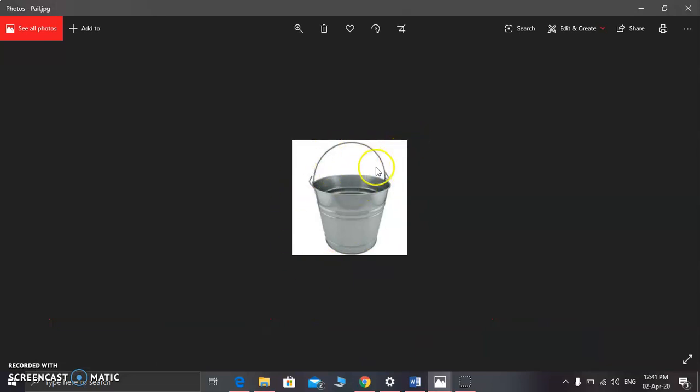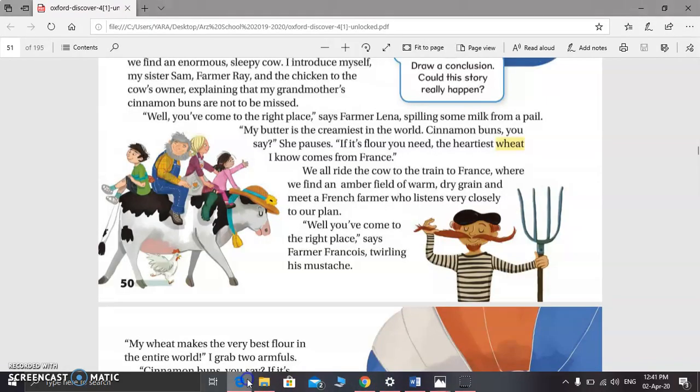It could be filled with liquid, of course. So they met Farmer Lena and she was spilling some milk from a pail, as I showed you. She said, my butter is the creamiest in the world, so it's full of cream. Cinnamon buns, you say? She pauses. She was wondering and then she gave a pause—she stopped talking. If it's flour you need, the heartiest wheat I know comes from France.